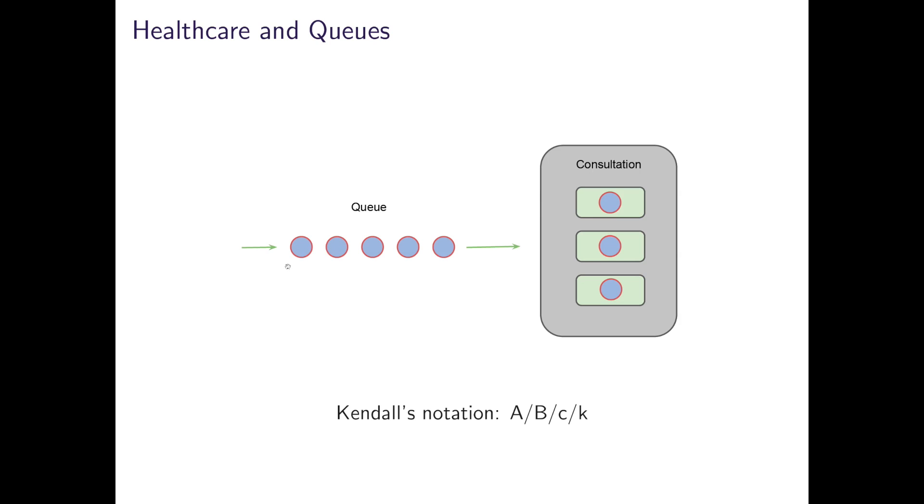In some cases this may be infinite if any number of patients are allowed to join the queue. Or it could be a fixed value if there is a physical constraint, for example, on the queue size. Or it is capped and people are not allowed to join the queue if this buffer size is exceeded. In fact, there are several more letters in Kendall's notation, but the first four are usually sufficient to capture most commonly observed queues.